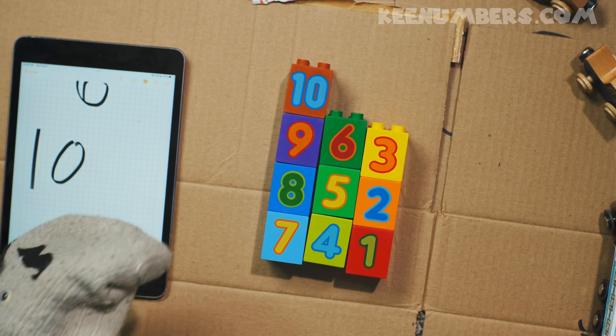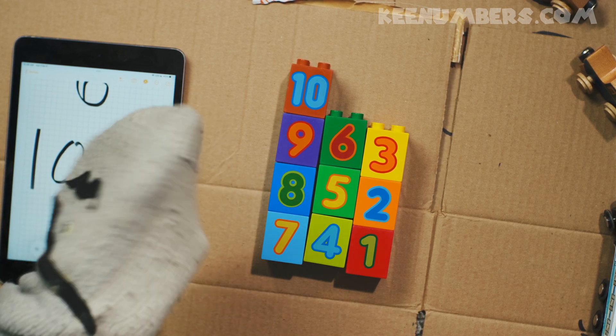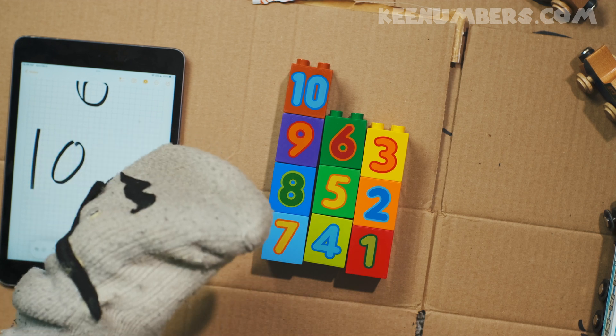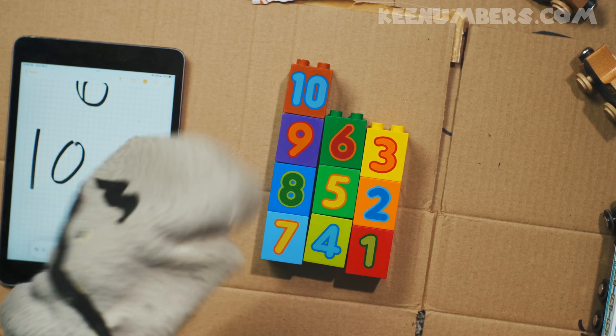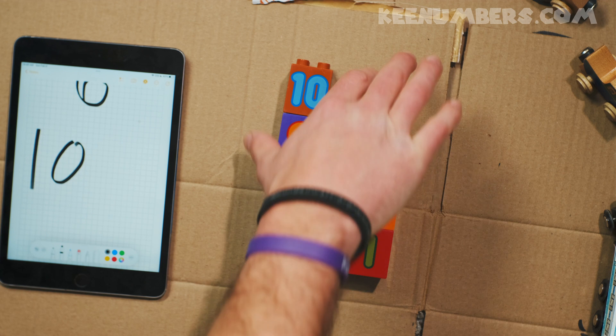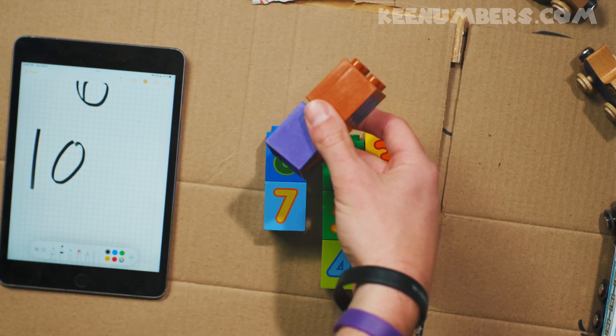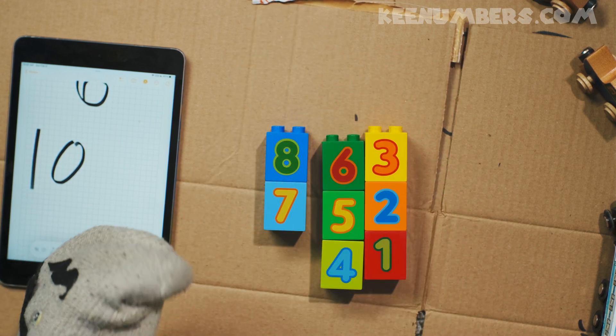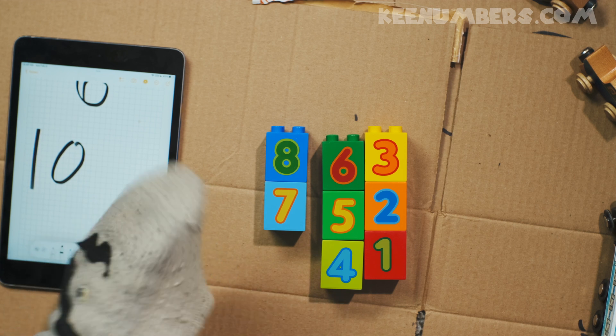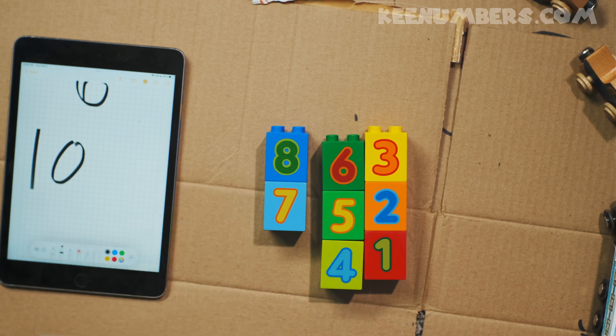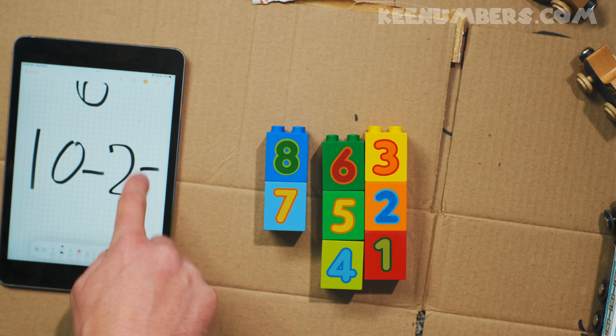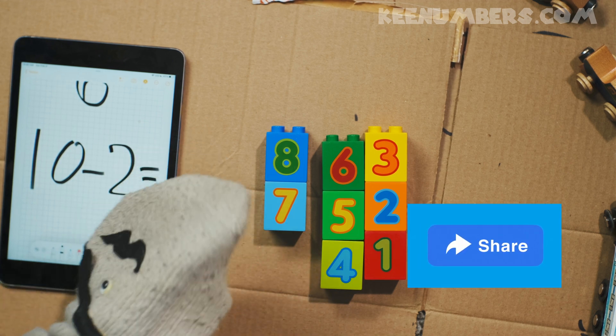So we're going to subtract how many? Let's take away two. Yarr, har, har. Okay, Pirate Sam. Ten minus two. We have our two blocks. Let's take them away. How many are left? Well, the numbers tell us. Ten minus two is equal to what? Eight. Yarr, har, har.